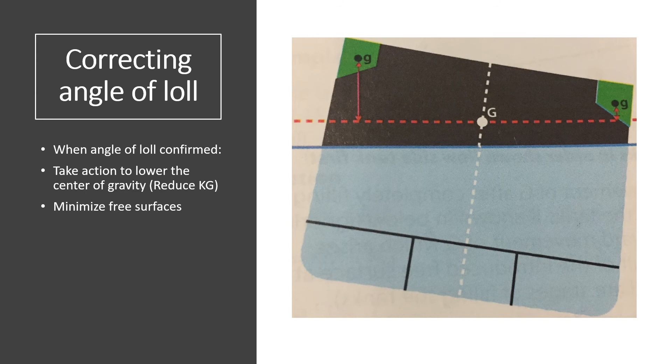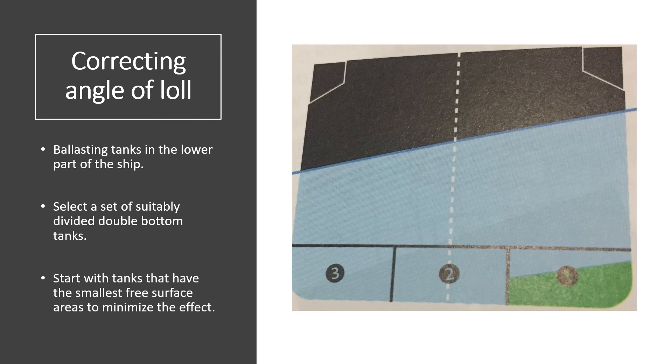Try to minimize the free surfaces. Sounding all the tanks will identify any tanks that are slack. Minimize the loss of GM due to free surface effect by topping up the lower side ballast tanks. If you're discharging, you must discharge from the top side, and if you're topping up, you must top up the lower side ballast tanks first, because that will attract the center of gravity of the ship towards the lower side tanks and further the distance between the center of gravity and the metacenter, which is the prime objective in this case.